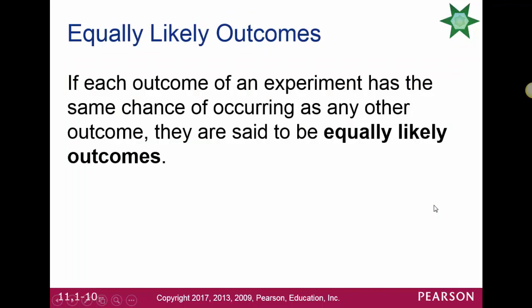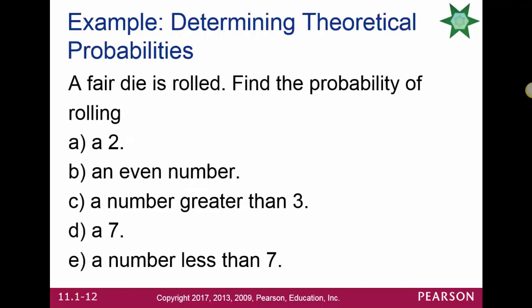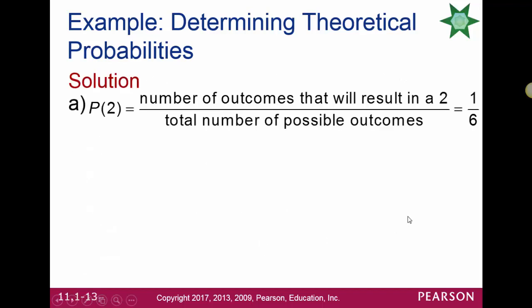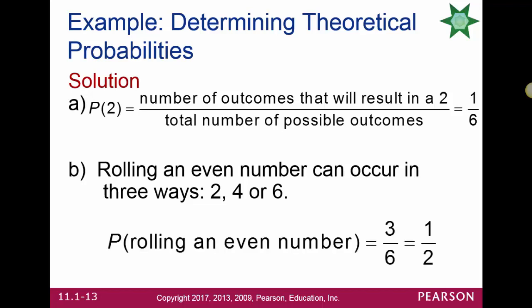If an outcome of an experiment has the same chance of occurring as any other outcome, the outcomes are said to be equally likely. The theoretical probability of an event is calculated as the number of outcomes favorable to event E divided by the possible number of outcomes. If we roll a fair die, the probability of getting a 2 is 1 out of 6. The probability of rolling an even number — getting a 2, 4, or 6 — is 3 over 6, or 1 half.